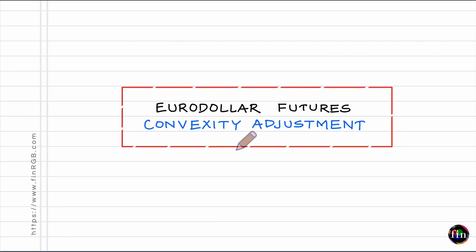In this video, through a simple example and rather simple arguments, we will try and explore the concept of EURUSD futures convexity adjustment. Convexity is a term we use for curvature, and this simple example will help us get to the origin of this convexity adjustment — why this adjustment is required and also a few rules of thumb to understand how much this adjustment should be.